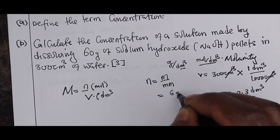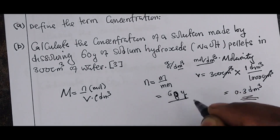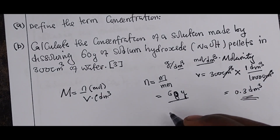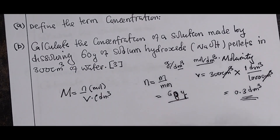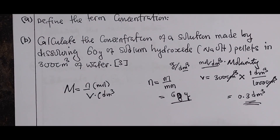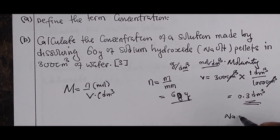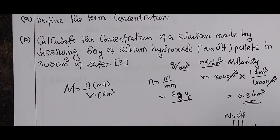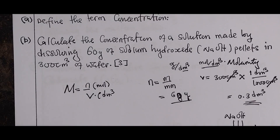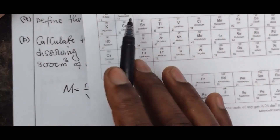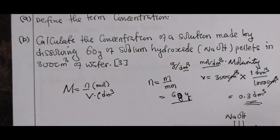The given mass is 60 grams. Now we find the molar mass of sodium hydroxide (NaOH): hydrogen is 1, oxygen is 16, and sodium from the periodic table is 23. So: 1 + 16 + 23.